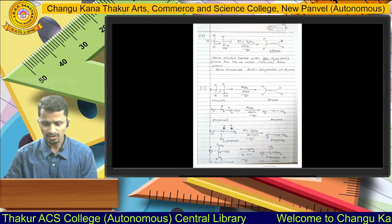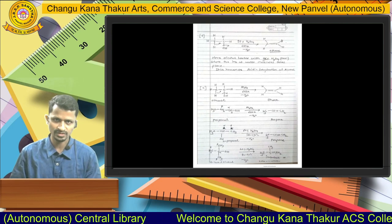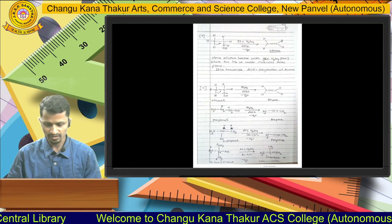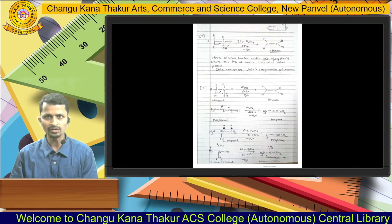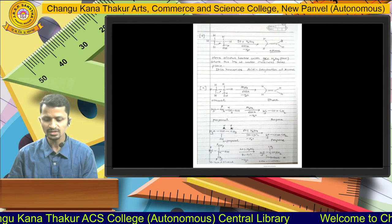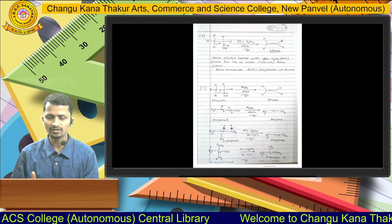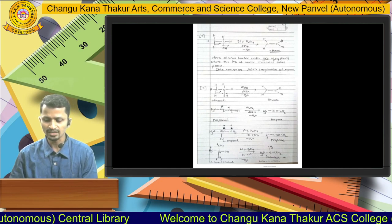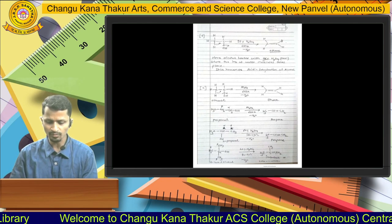Ethanol can also lose the water molecule in presence of aluminum oxide, which also gives ethene as the product. The next example is propanol. Propanol when treated with alumina (aluminum oxide) also gives propene, where the OH group is lost from the alpha carbon atom and hydrogen from the beta carbon atom.